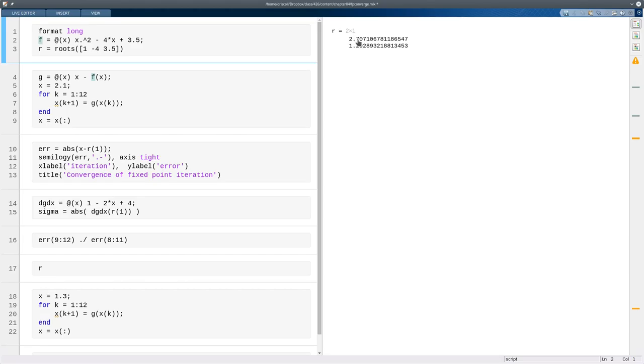So let's look for the first one using the fixed point iteration. So I define a g such that whenever f is 0, g of x is equal to x. So a fixed point of g corresponds to a root of f and vice versa. And I'll start at 2.1 and I'll do the fixed point iteration 12 times.